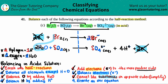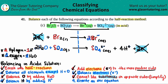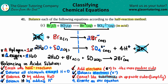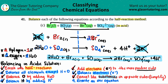Everything on the left stays on the left, everything on the right stays on the right of the yield sign. The final balanced equation is: 2H₂O + Br₂(l) + SO₂(g) → 2Br⁻(aq) + SO₄²⁻(aq) + 4H⁺(aq). And that's the end — I think this is the last of over 30 redox balancing problems, so hopefully you've grasped the method.